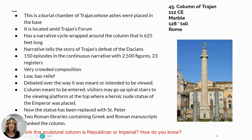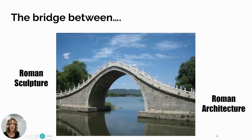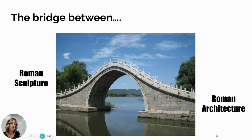In our last screencast, we ended with Trajan's Column for Roman Sculpture. As we move forward, this is kind of the bridge between Roman sculpture and Roman architecture, because Trajan's Column was part of an entire complex. We're going to use that image to transition now from Roman sculpture into Roman architecture.